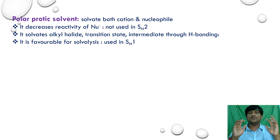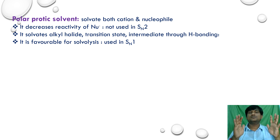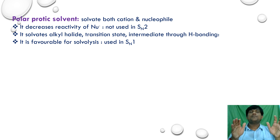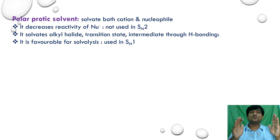If you take polar protic solvents, they can solvate both cations and anions. For SN2 reactions, since the nucleophile is solvated by the polar protic solvent, the attacking nature and reactivity of the nucleophile is decreased. So polar protic solvents are not suitable for SN2 reactions.